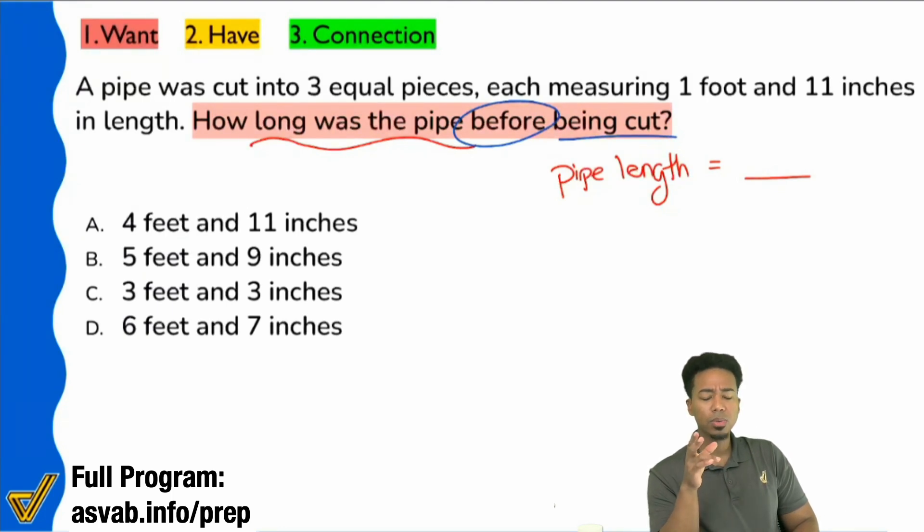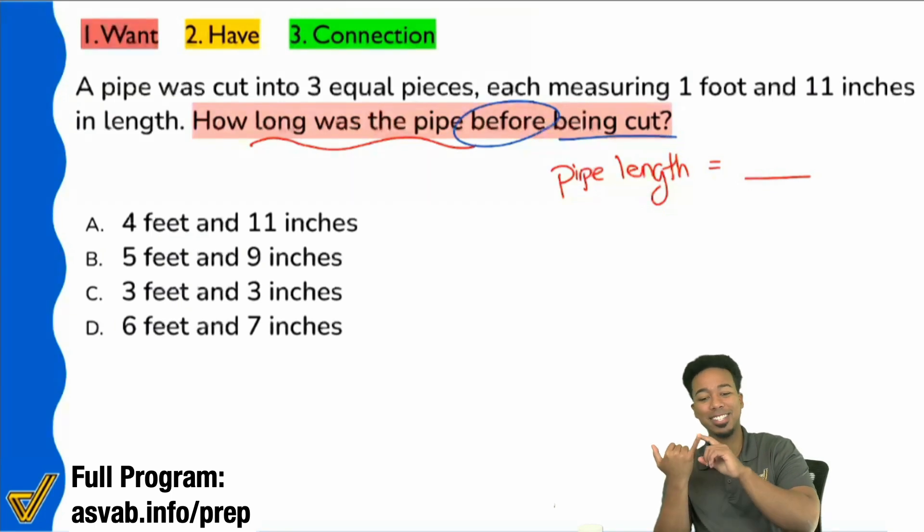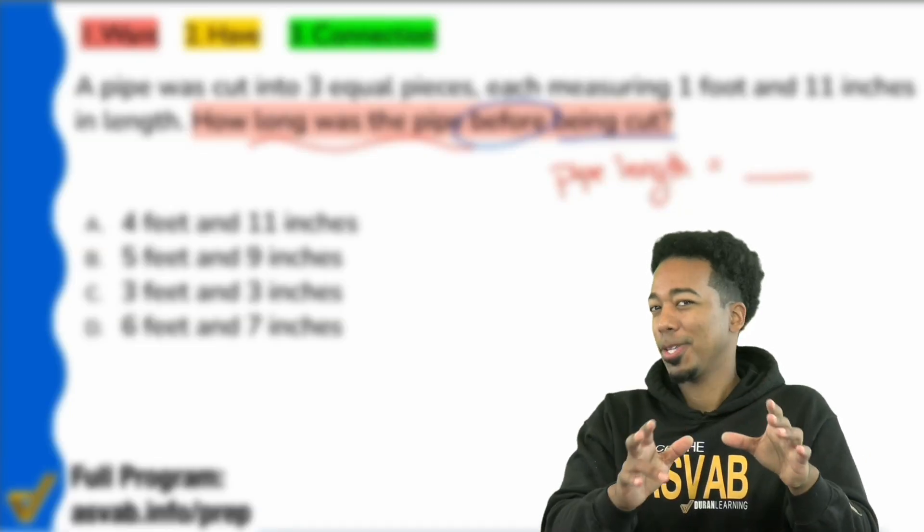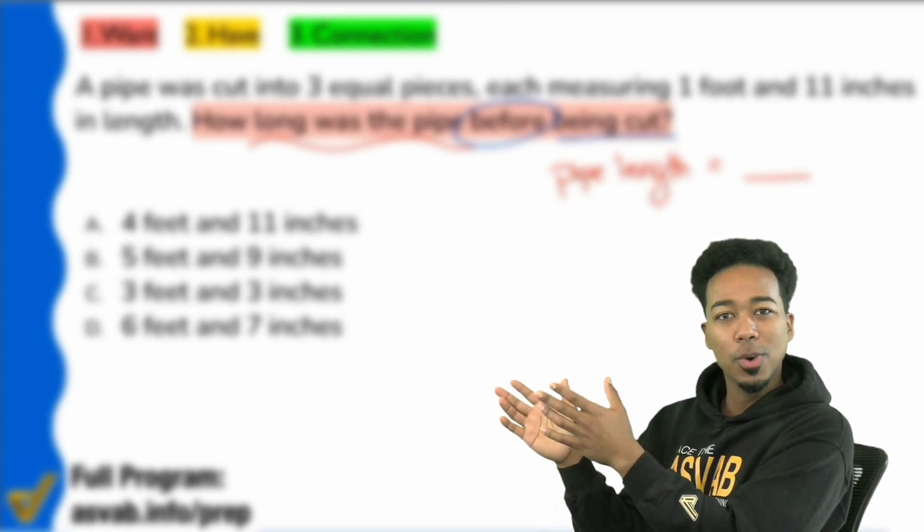You really want to pay attention to that because it's going to make the difference between adding or subtracting, multiplying or dividing, figuring out which order to go in. It's really going to make a big difference. But the first thing we're going to realize is we're looking for the length of the pipe, and number two, we're looking for the length of the pipe in the beginning of the problem.